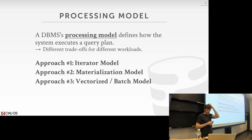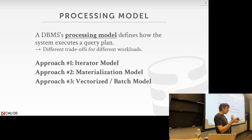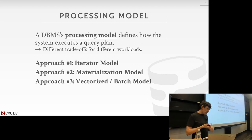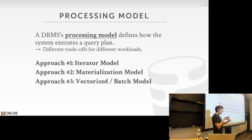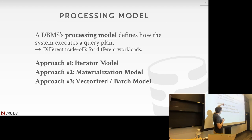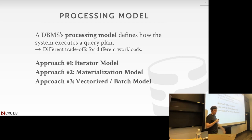The first thing to discuss is the processing model. A database system's processing model specifies how it executes a query plan — whether you go top to bottom or bottom to top, and what you pass between each operator. There are three main approaches with different trade-offs and performance implications. The most common is the iterator model, used in pretty much every database system. The materialization model is a specialized version primarily for in-memory systems. The vectorized model is based on the iterator model but sends batches or vectors of data, more useful for analytical workloads.